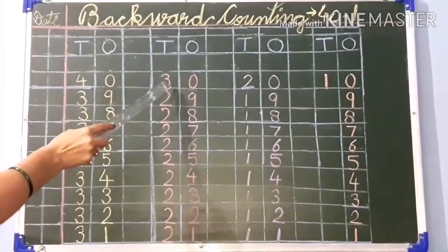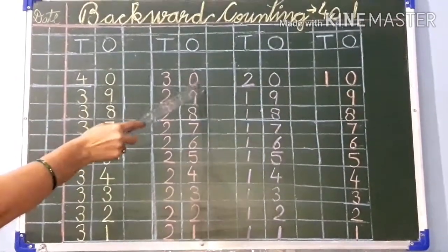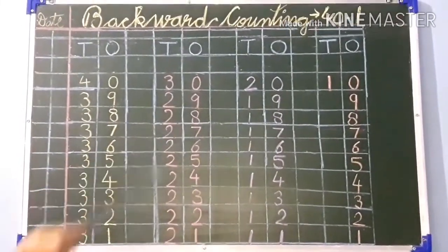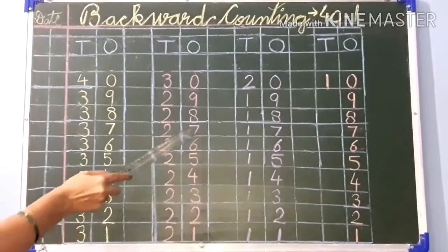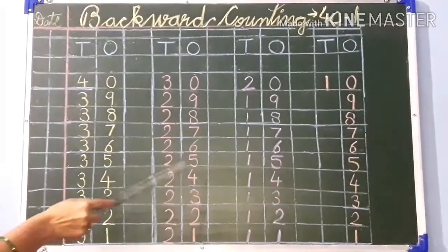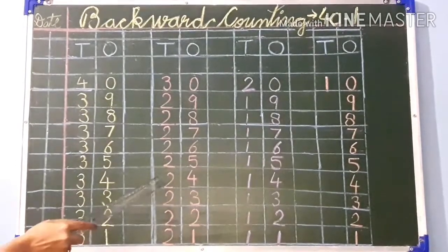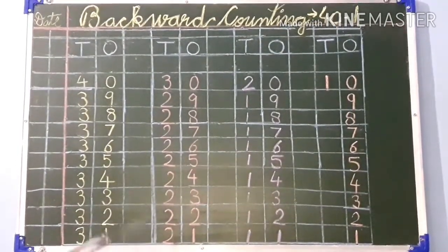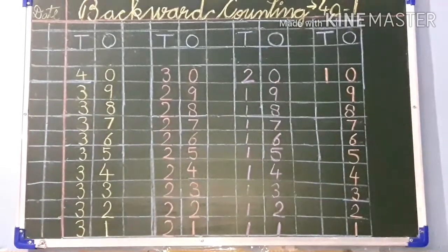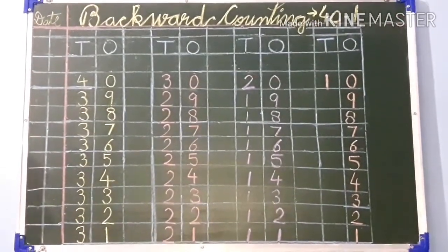Then again start writing 30, 29, 28, 27, 26, 25, 24, 23, 22, 21.